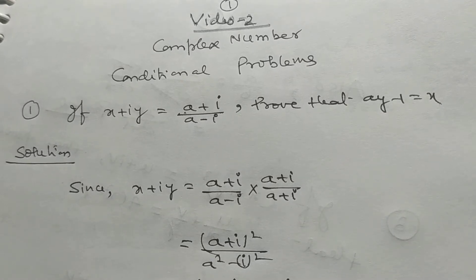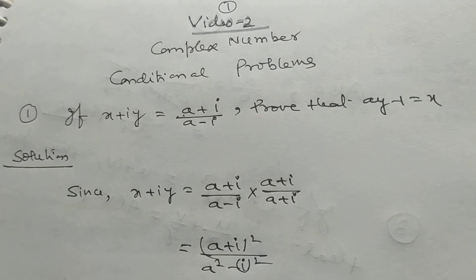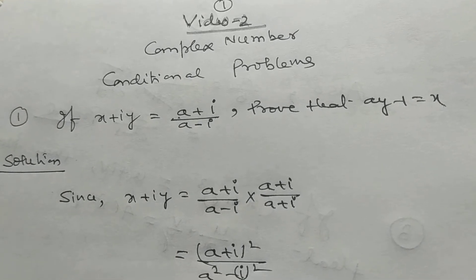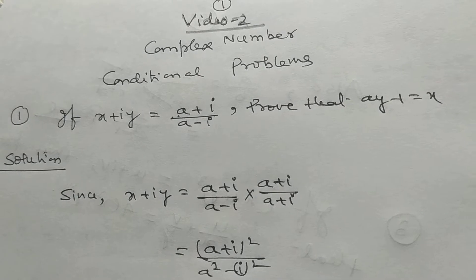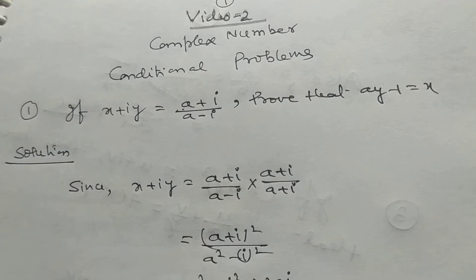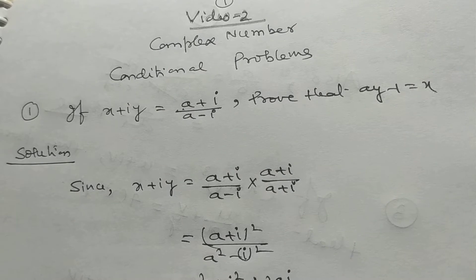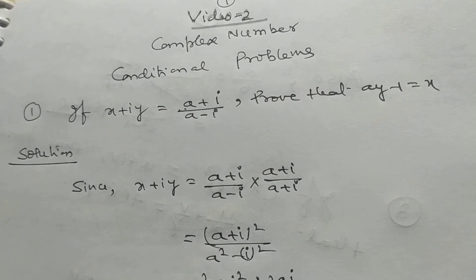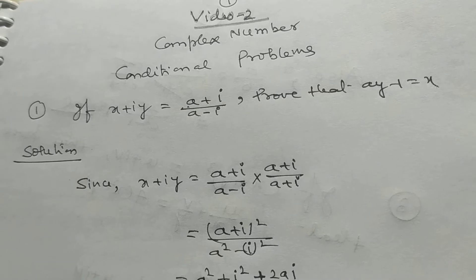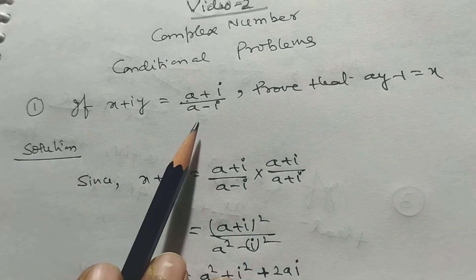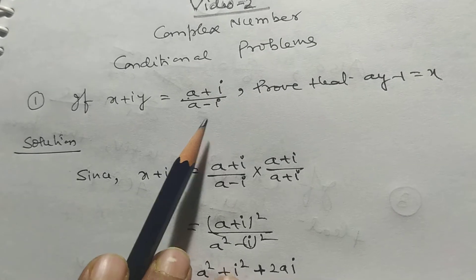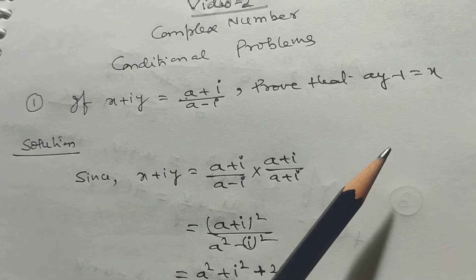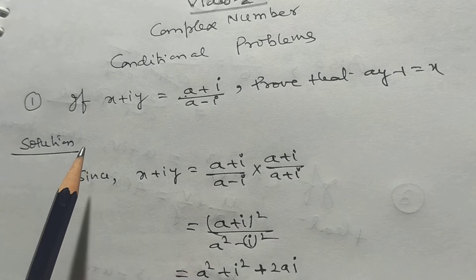My dear students, today I want to solve some important conditional problems. Some conditions are given and you have to solve the problem. Suppose if x plus iy is equal to a plus i divided by a minus i, prove that ay minus 1 is equal to x. How will you solve this type of problem?